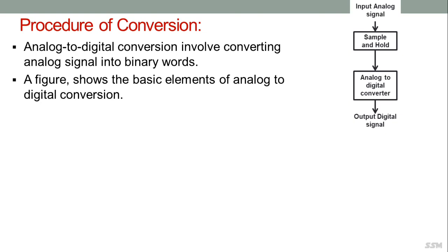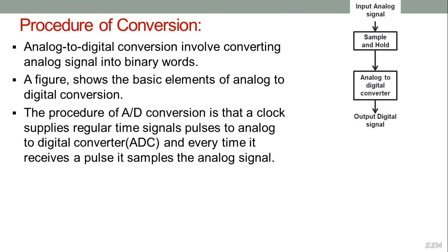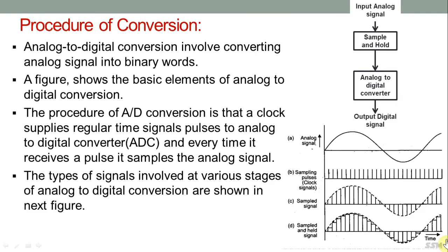Analog to digital conversion involves converting an analog signal into binary words. The basic elements include an analog input signal connected to a sample and hold circuit, whose output feeds an analog to digital converter. A clock supplies regular time interval pulses to the ADC, and every time it receives a pulse, it samples the analog signal.